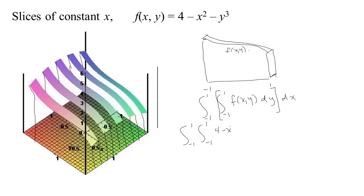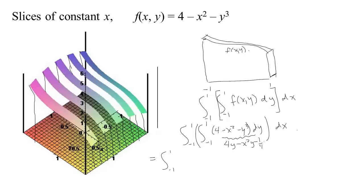In this particular case, our function f(x,y) is 4 minus x squared minus y cubed. Once we've done the inner integral, we'll integrate with respect to x. All along the face of this slice the x value is constant, so we treat x as a constant — this is just a one-dimensional integral in y from Calc 1. To do that integral, we find an antiderivative and evaluate between the two endpoints. The antiderivative of 4 with respect to y is 4y; the antiderivative of negative x squared (held constant) is negative x squared y; and the antiderivative of negative y cubed is one-quarter y to the fourth.